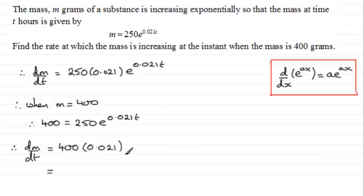So 400 times 0.021, what does that give us? Well, it gives us exactly 8.4, and the units would be grams per hour.